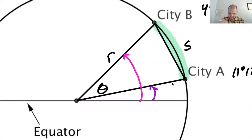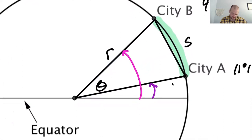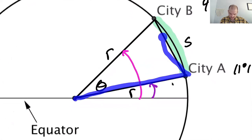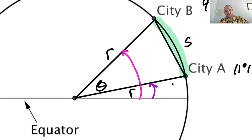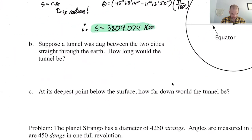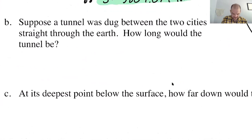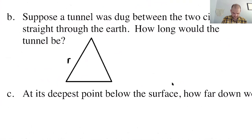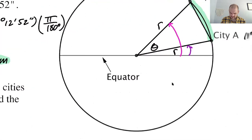If you look at the picture, we're trying to find the length of the tunnel. We have angle theta, which we know. We know the radius. Since this is essentially a sphere, both sides from the center to the surface are the radius — which means the triangle formed by the center and the two cities is an isosceles triangle. I'm going to label the tunnel length T.